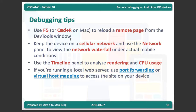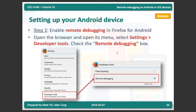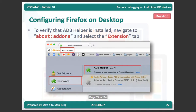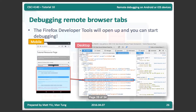You can also check the network waterfall to debug network traffic and go to the Timeline panel to see rendering or CPU usage. If you prefer Firefox, it also provides a remote debugging feature. The setup is basically the same — enable USB debugging, configure Firefox on your Android device, then install a tool in the desktop browser and open the console.